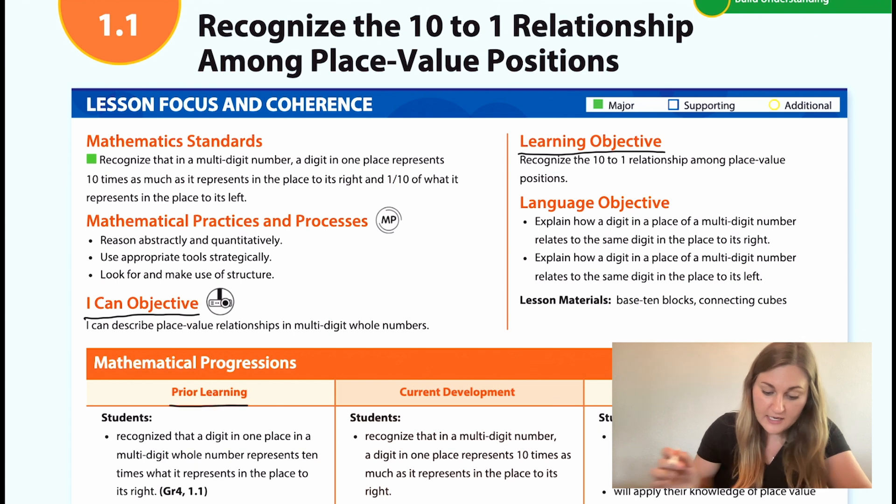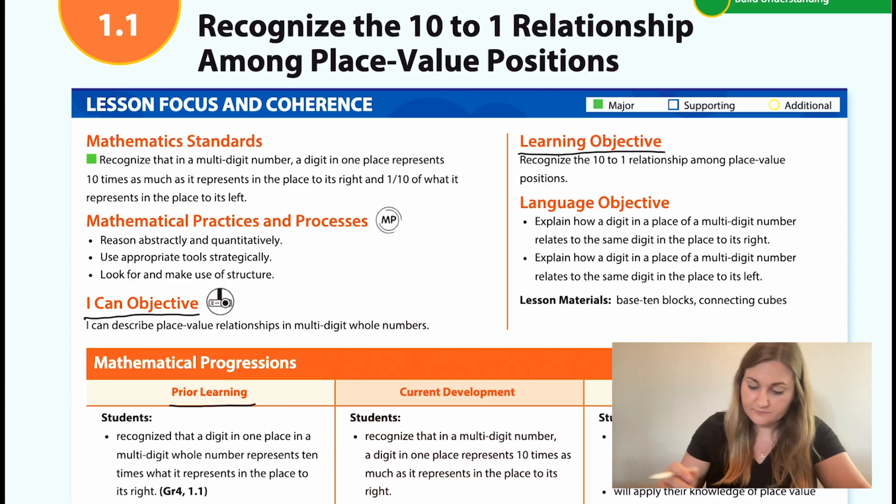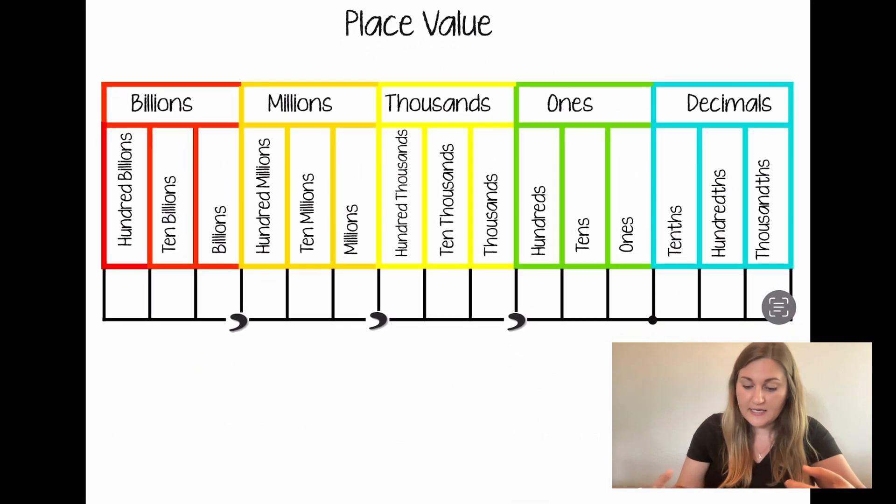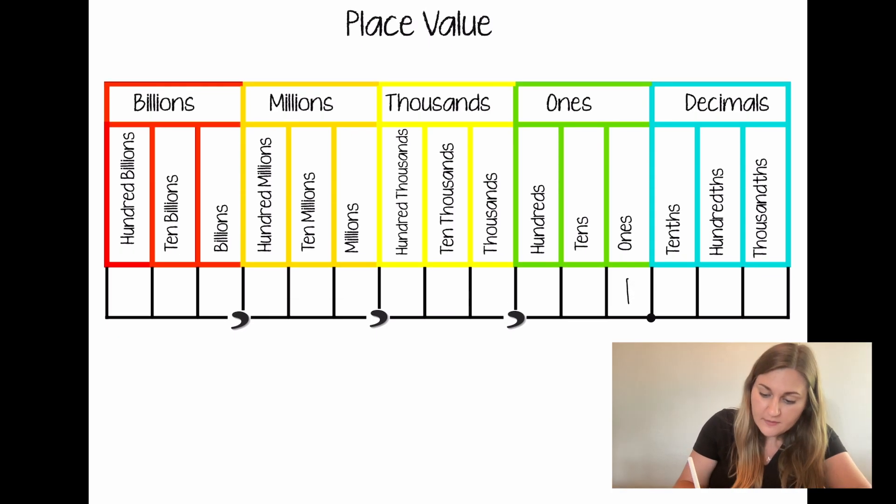Prior learning from 4th grade, students recognized that a digit in one place in a multi-digit whole number represents 10 times what it represents in the place to its right. Now what that's really talking about here is if we're looking at a place value chart, and if I start at the ones place here and I move up next door, I'm moving to the left to the tens place value, students know from 4th grade that what they just did was they multiplied by 10.